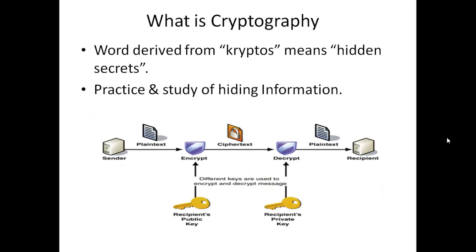In cryptography, the sender hides the information and sends the hidden information to the receiver over the network, where the receiver extracts the hidden information. What is cryptography? Cryptography derives its name from a Greek word called 'cryptos', which means hidden secrets.